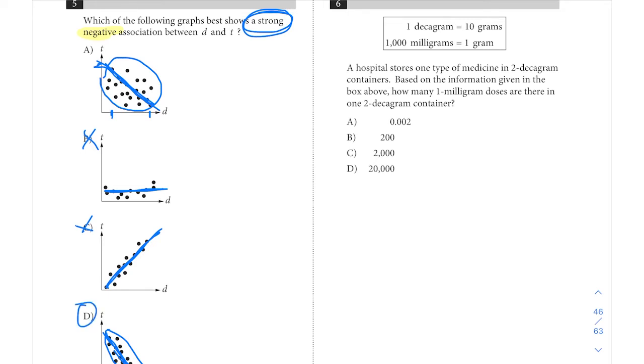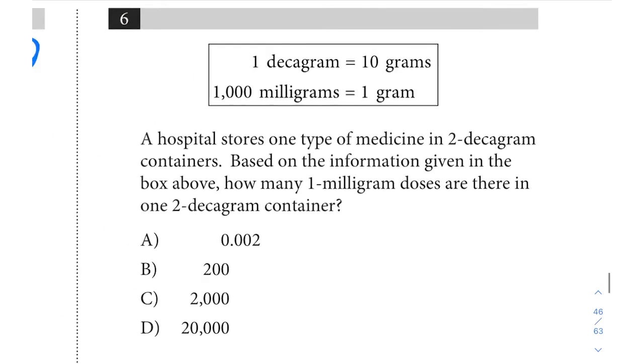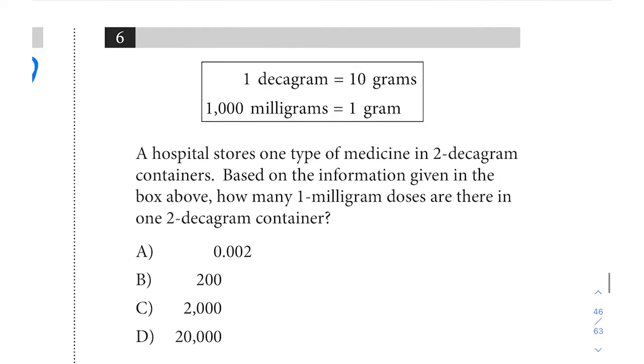Now let's take a look at number six. For six we're going to have a relationship here where we have to be able to do some unit conversions. So they tell us one decagram equals ten grams and a thousand milligrams equals one gram.